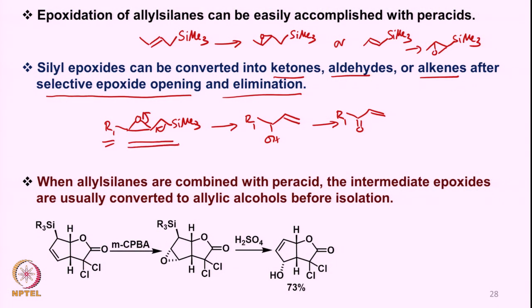Now say for example if you have an epoxide from an allylsilane, and the conditions of epoxidation allow the opening of the epoxysilane, this can occur by the addition of sulfuric acid. When this gets protonated with sulfuric acid, there are two possibilities for which bond breaks, but this bond breaks because you generate a positive charge on the beta carbon atom. The possibility of beta carbocation formation means the carbon-silicon bond then breaks, and the corresponding double bond is generated — this is how the opening of the epoxide allows regioselective opening.